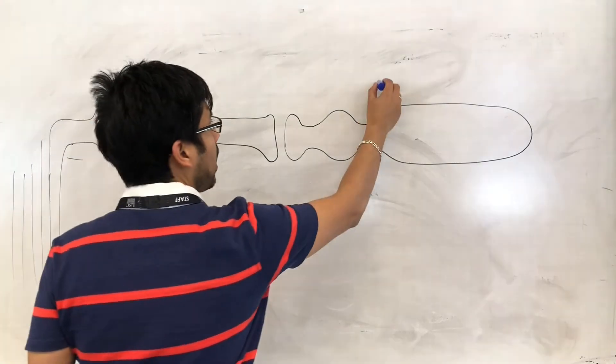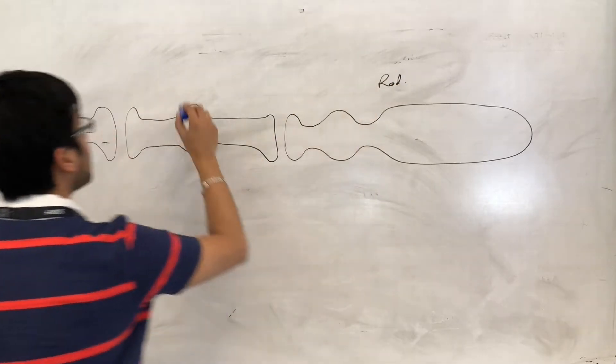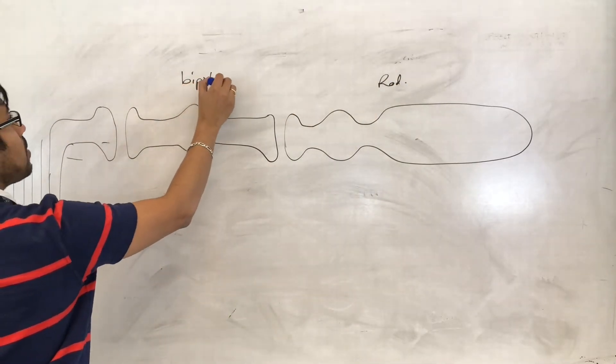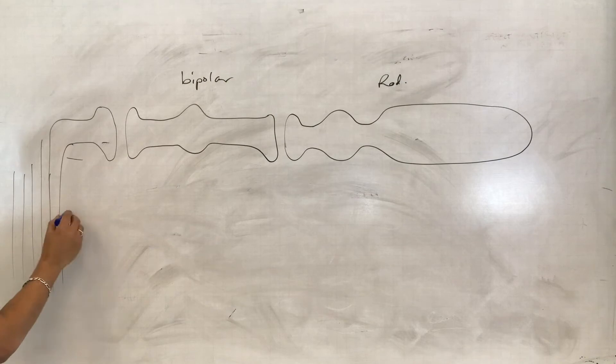Okay, so here we have the rod cell, we have the bipolar cell, and we have our sensory neuron here.